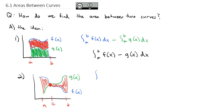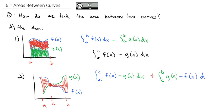First, we'll integrate just from a to c where they intersect, and we'll take the top function f of x and subtract the bottom function g of x dx. Then we'll add to it the right side. As we go from c to b, the g of x function is on top, so we start with g of x and subtract off the bottom function f of x dx.